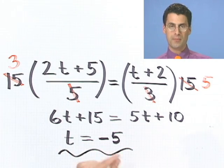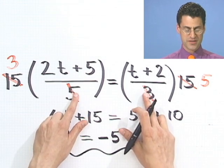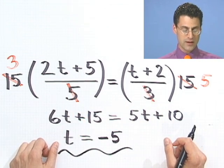So in fact, t would equal minus 5. So even when you have sort of denominators with numbers, you can clear off those denominators by multiplying through by a common multiple. And all of a sudden, you have a simple linear equation. You can solve it.